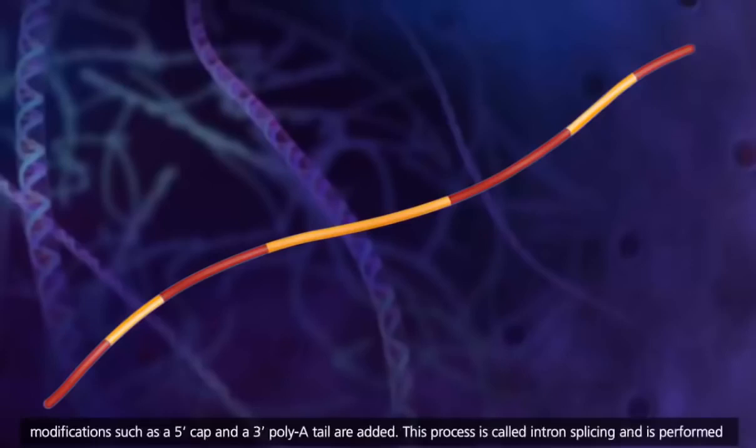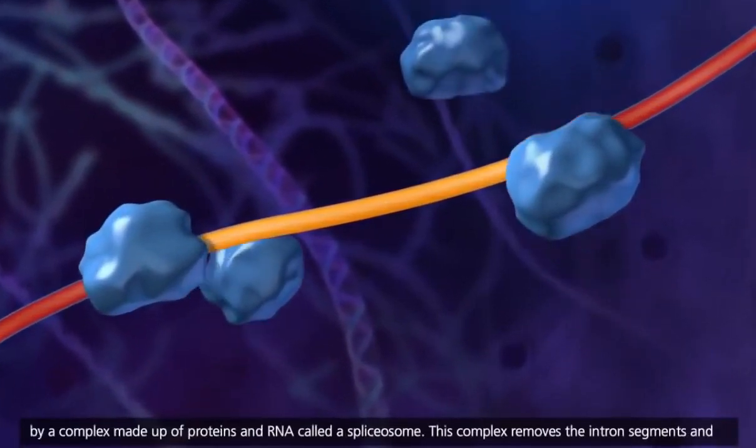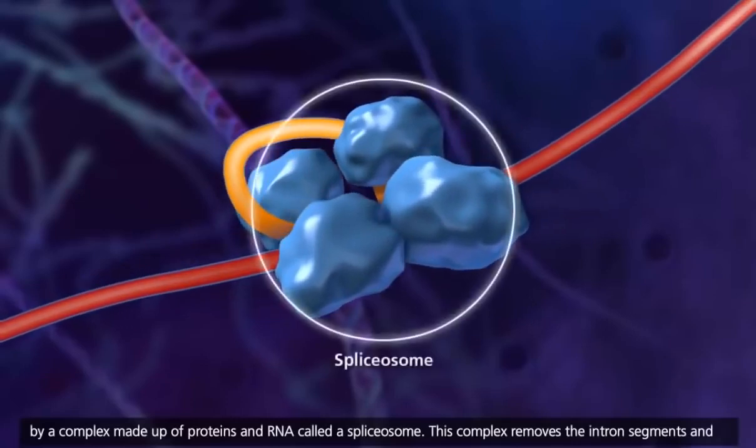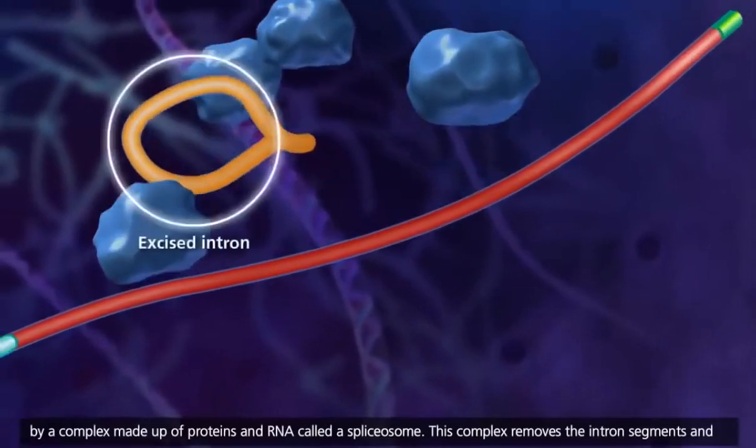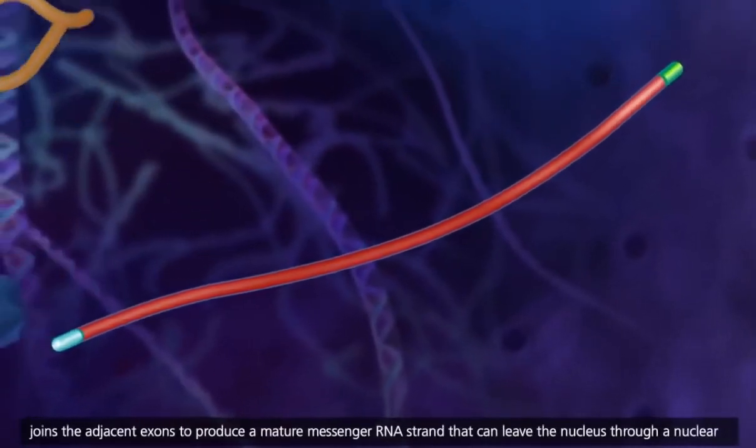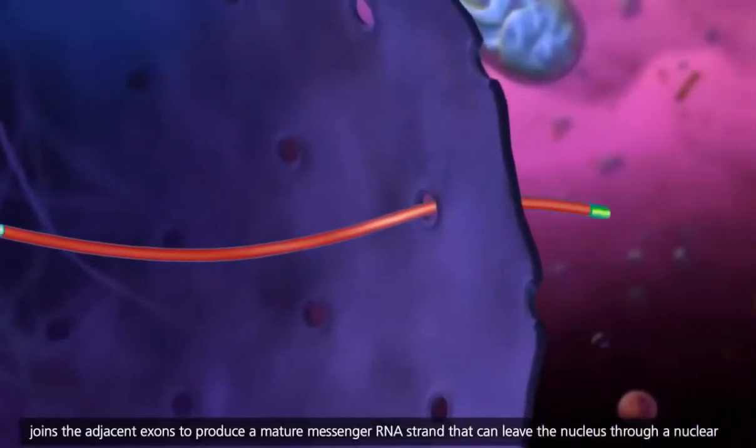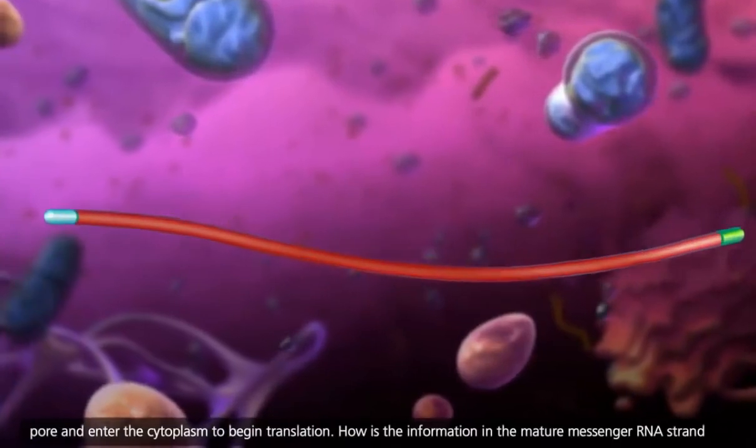Modifications such as a 5' cap and a 3' poly-A tail are added. This process is called intron splicing, and is performed by a complex made up of proteins and RNA called a spliceosome. This complex removes the intron segments and joins the adjacent exons to produce a mature messenger RNA strand that can leave the nucleus through a nuclear pore and enter the cytoplasm to begin translation.